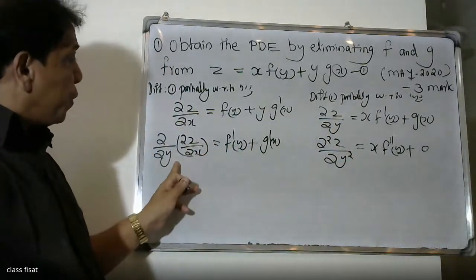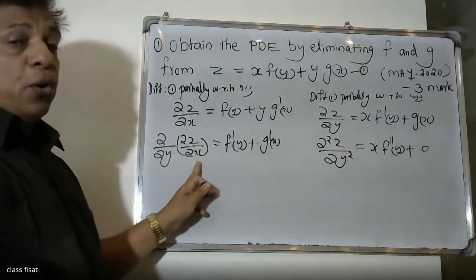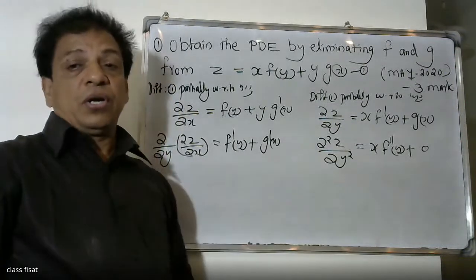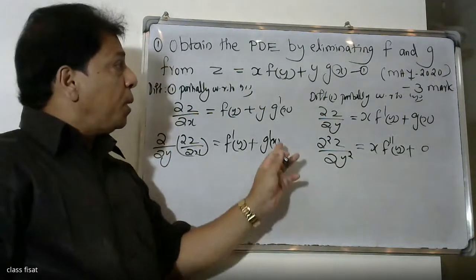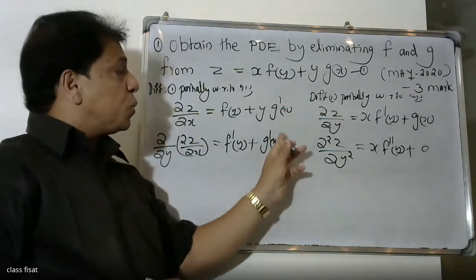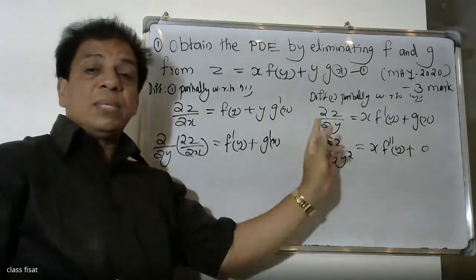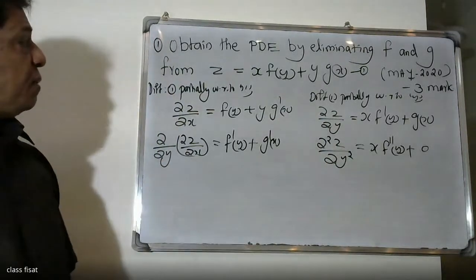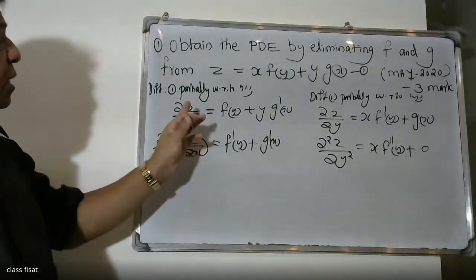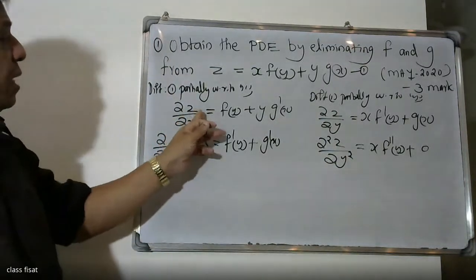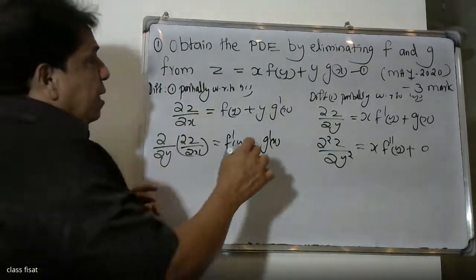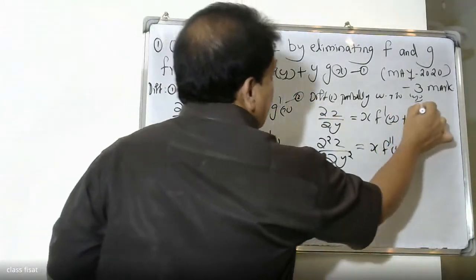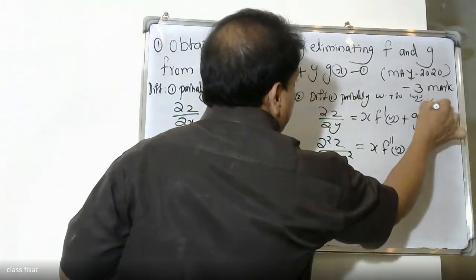Now we connect equations two and three together to eliminate the arbitrary functions f and g. We will multiply equation two by x and equation three by y and then add them.